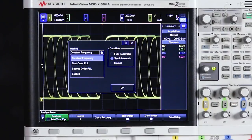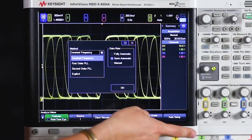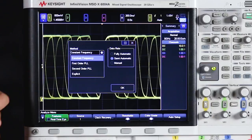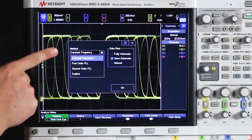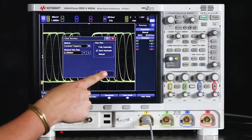So again an explicit clock is when you have that clock signal that you're actually able to plug into one of the channels. Constant frequency is what you use when you're working with an embedded clock. And we'll talk about the first and second order PLLs in the next video. So let's leave it at constant frequency and select OK.